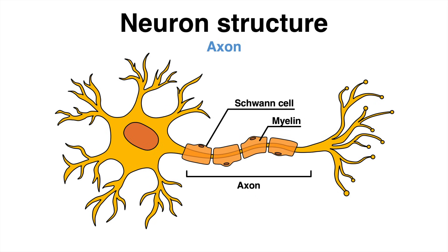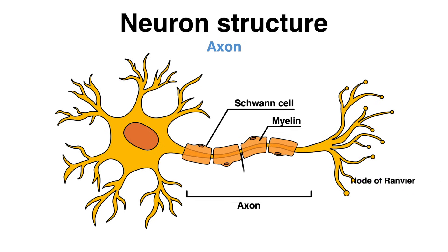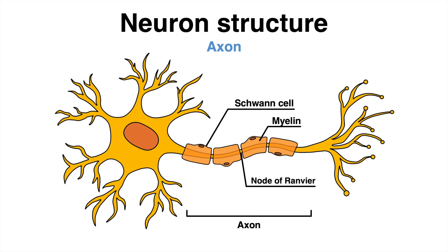In between the myelin sheaths are gaps called nodes of Ranvier. These nodes allow diffusion of ions, as ion channels are present here. This fantastic composition of the neuron leads to very fast electric signal transmission.